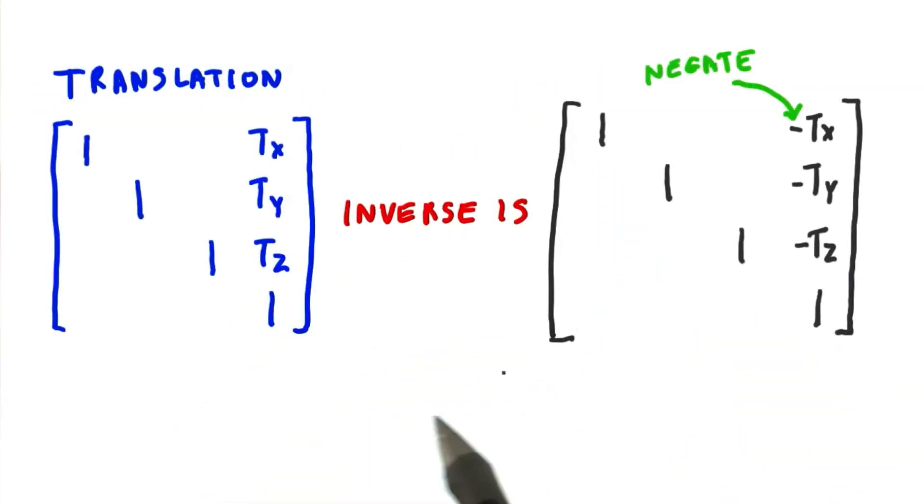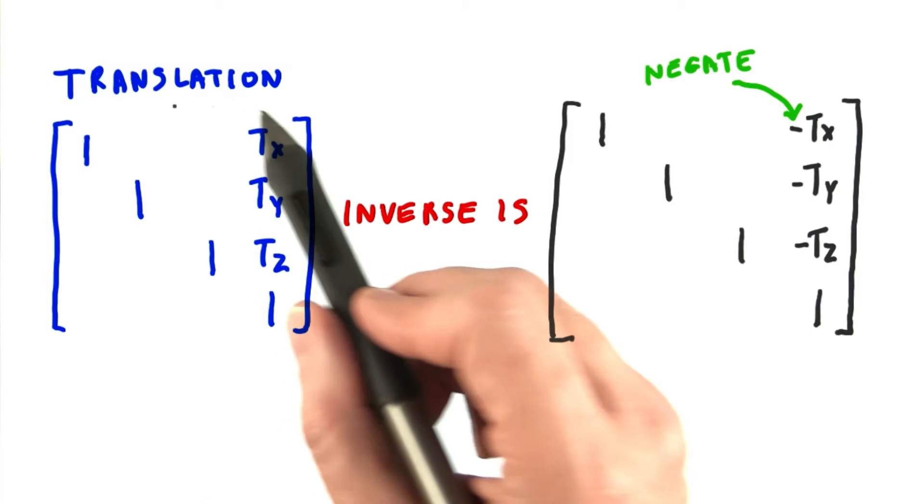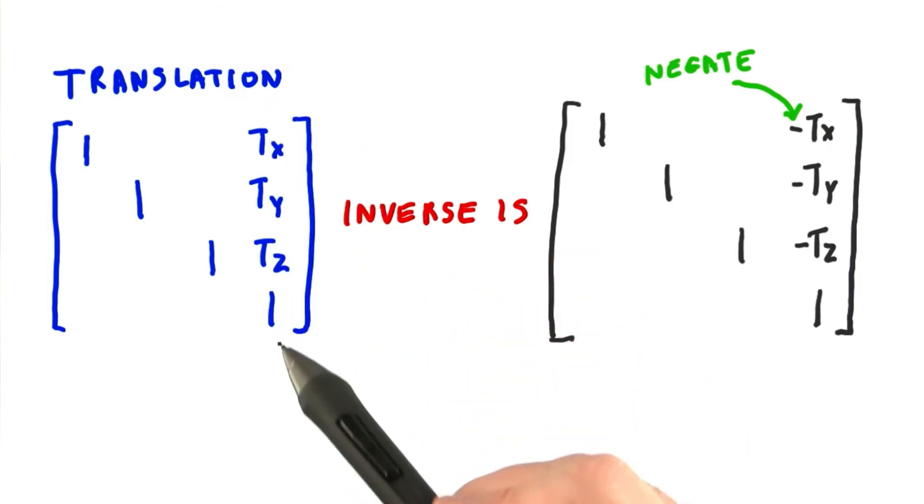Let's look at the inverses of some common transform matrices. For translation, we start with our translation values over here. The inverse is the negation of all those translation values, which makes sense. You move to one direction, and then you come back the other direction.